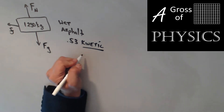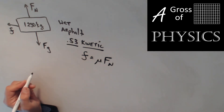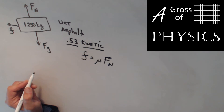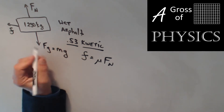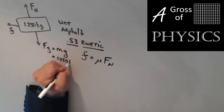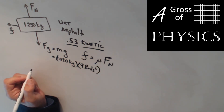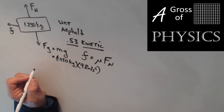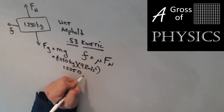To find friction we use the equation: friction equals mu times Fn. We already have mu and we need to find the normal force. On flat ground, the normal force is equal and opposite to gravity. So we calculate Fg as mg: 1250 kilograms times 9.8 meters per second squared, which gives us 12,250 newtons.